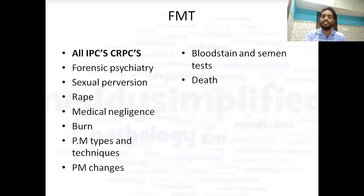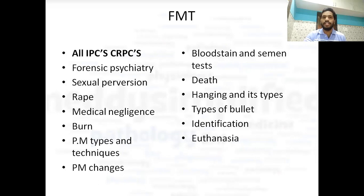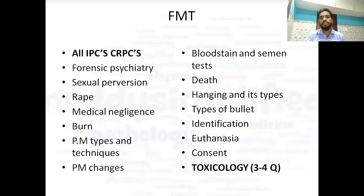Death is a very important topic — the definition of death and related questions. Then hanging and its types: judicial hanging, suicidal hanging, homicidal hanging — and what changes are seen after hanging. Types of bullet are important — you should know all the types of bullet. Then identification, which is a vast topic but you should cover it. Then euthanasia — which country it is legal in, which country it is illegal — that is important. Consent is very important. Toxicology is a very big part of forensic medicine and every time three to four questions have been asked, so you should complete it.